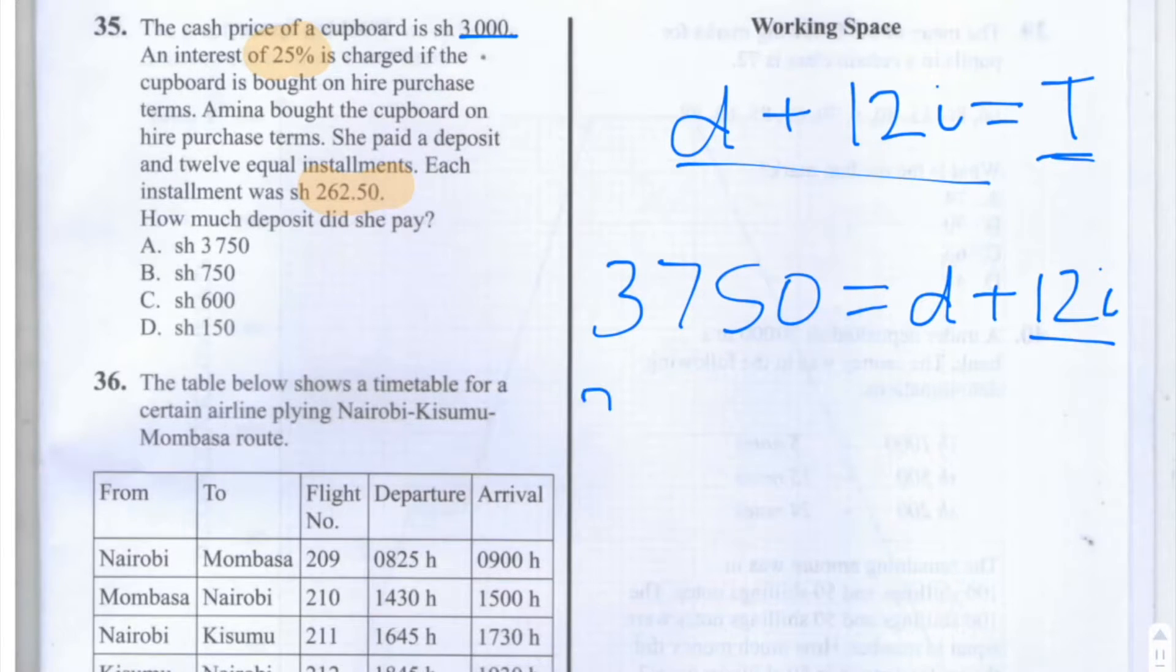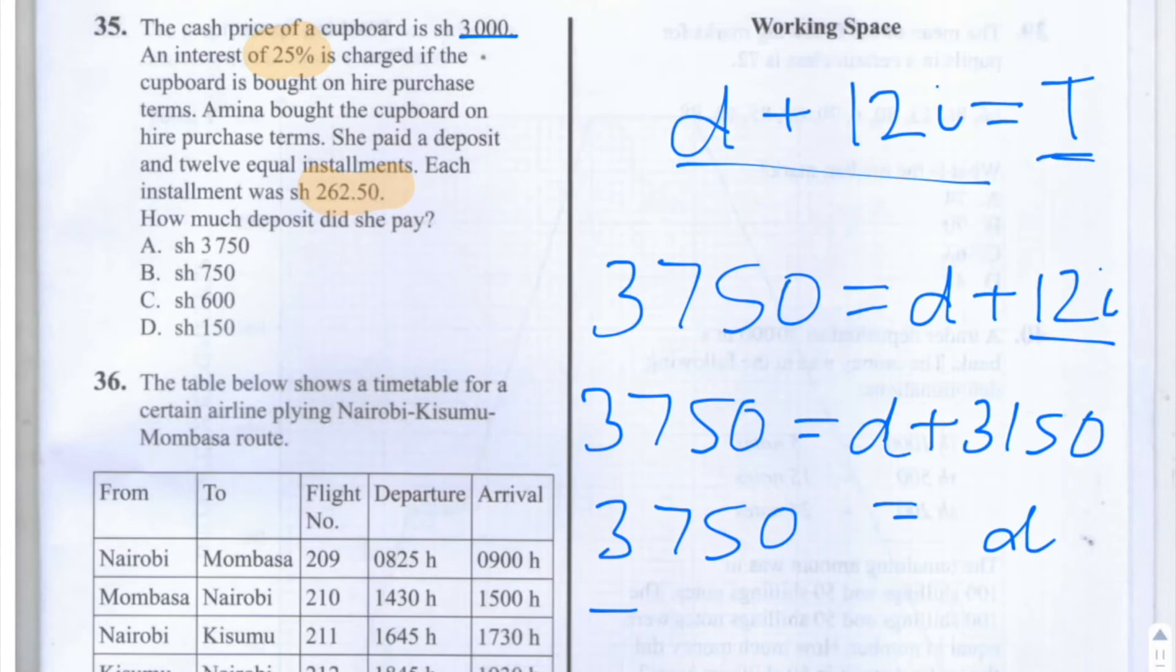So we have 3,750 is equal to d plus 3,150. Our next step is to make sure that we have d on its own, so d isolated on one side. So we subtract each side by 3,150. So we get d is equal to 3,750 minus 3,150. And 3,750 subtract 3,150 is 600. So d is equal to 600 shillings.